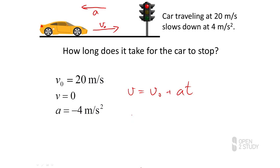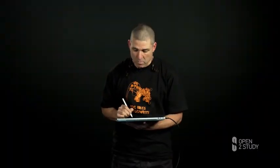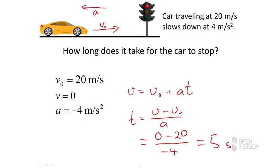It's good practice to find that our time is going to be v minus v₀ divided by acceleration. Now we can put our numbers in. V here was 0 — that's because we stopped — minus our initial of 20, divided by our acceleration of minus 4. So we've got 0 minus 20 divided by minus 4.